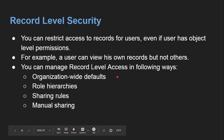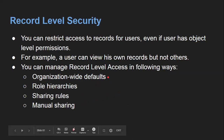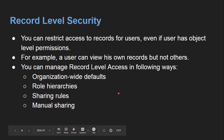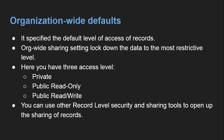You can manage record level access in the following ways. There are four things: first, organization-wide defaults; second, role hierarchies; third, sharing rules; and fourth, manual sharing. Organization-wide defaults restrict access, and if you want to open up those restrictions you can use role hierarchies, sharing rules, or manual sharing.